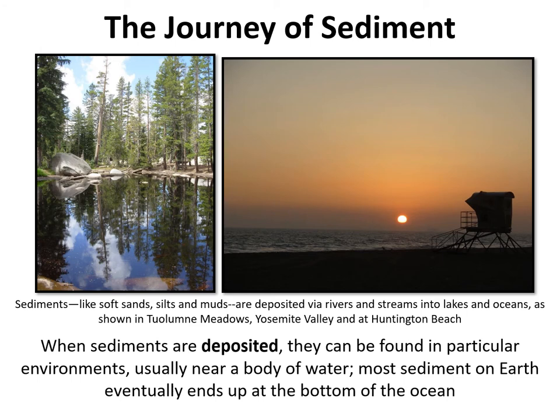When sediments are finally deposited, we typically get smaller, finer-grain sediment — very fine sand, silts, and clays — that end up deposited at the bottom of the ocean, as in an image of Huntington Beach, or at the bottom of a lake like Tuolumne Meadows in Yosemite. That fine sediment settles out of the water solution and builds up in layers over thousands to millions of years. Sediment deposition creates beaches we take for granted every day, built up from sediment carried by wind and water. Unfortunately, a lot of our beaches today are artificially infilled with sand shipped in from other places.